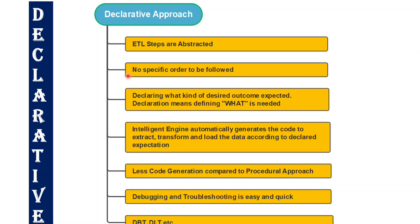In declarative approach, we declare what is needed instead of focusing on how to achieve it — 'what' is the keyword. The intelligent engine extracts, transforms, and loads data more efficiently and with high performance. As a result, we do not need to produce a huge amount of code, and debugging and troubleshooting is also very easy and quick. Examples of declarative approach include dbt (data build tool), which is very popular, and Delta Live Tables in Databricks, which also follows the declarative approach.